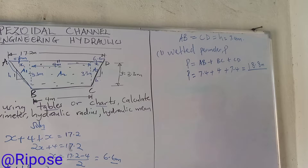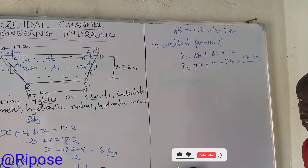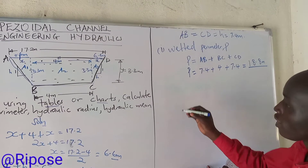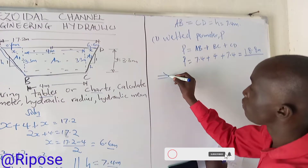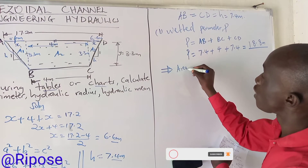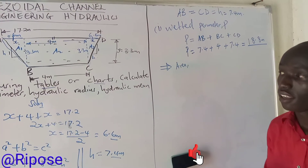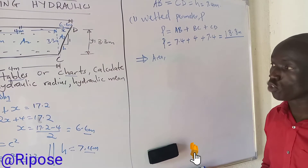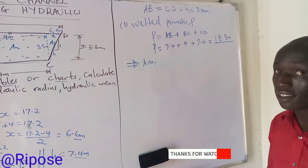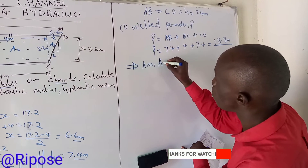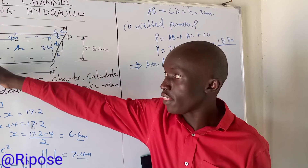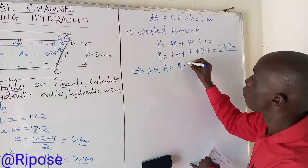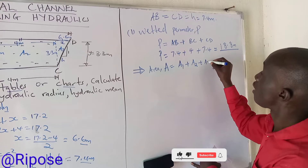Now we find the hydraulic radius. The hydraulic radius is the ratio of the area to the wetted perimeter: R equals A over P. But first, we need to find the area of the channel. We divide the cross-section into three parts: triangle A1, rectangle A2, and triangle A3.